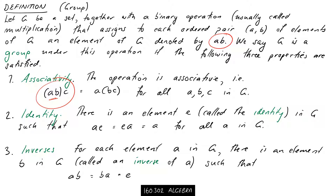The second property says there is an element E called the identity in G, such that A times E equals A and E times A also equals A. This was like R0 from our dihedral group example — it doesn't matter if you multiplied before or after the other transformation, you still just get that transformation back because the identity does nothing. Notice the statement says 'there is an element' — it doesn't say there is only one. That's something we'll have to prove later.